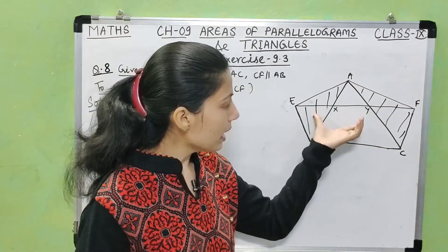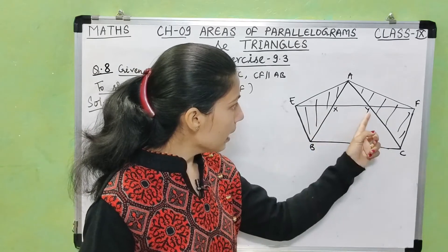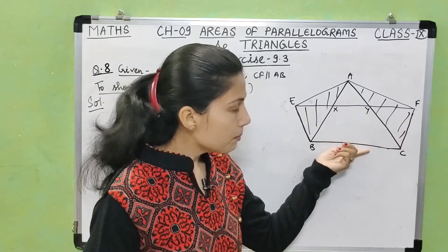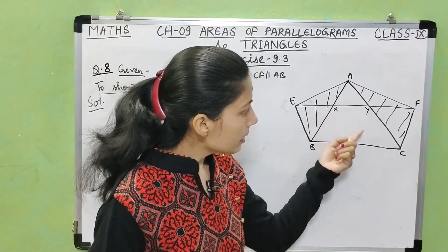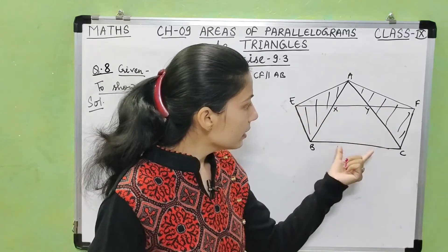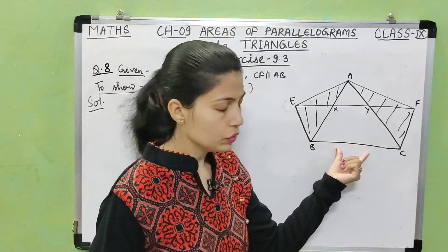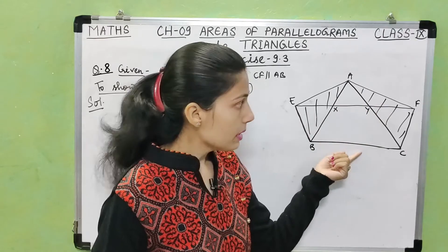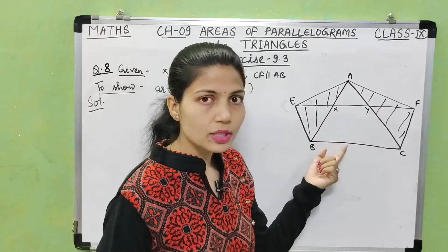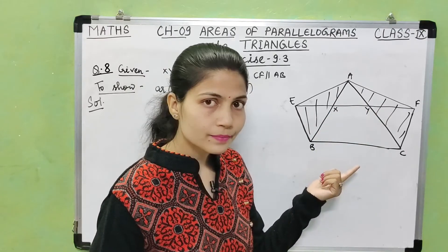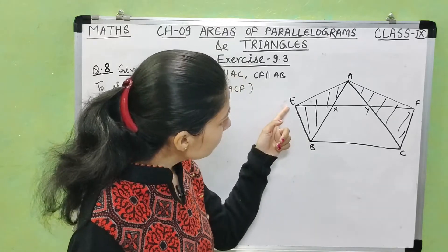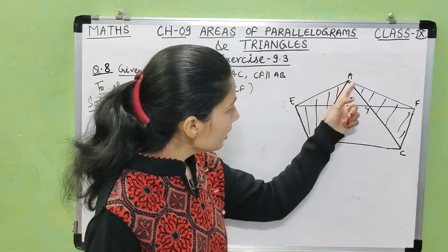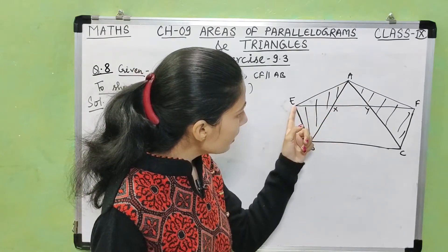Similarly, BCFX is also a parallelogram since CF is parallel to AB. These two parallelograms BCYE and BCFX are on the same base BC and between the same parallels BC and EF. Therefore their areas are equal.